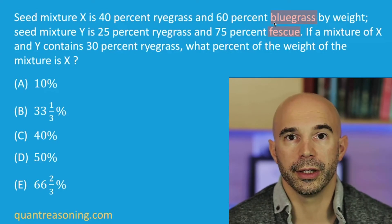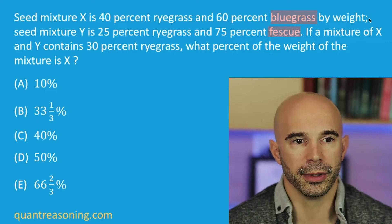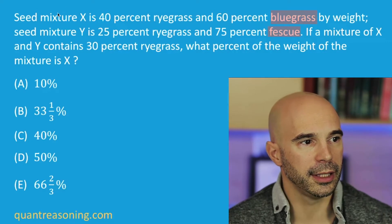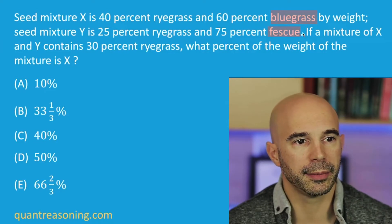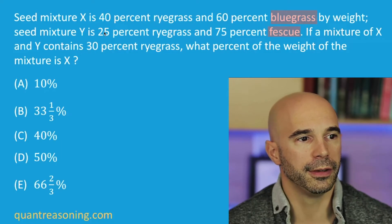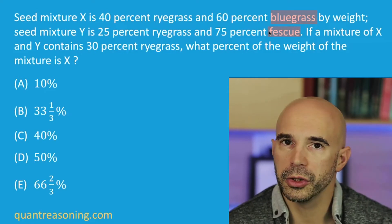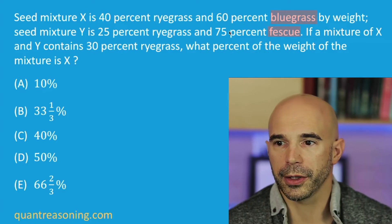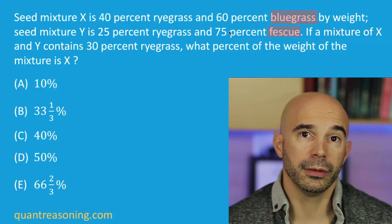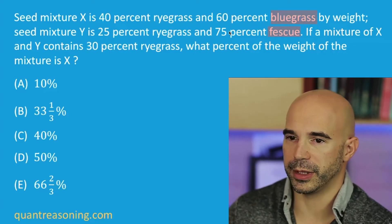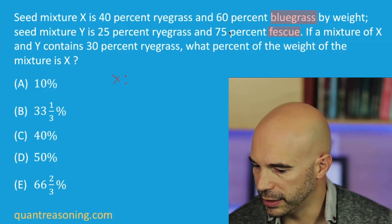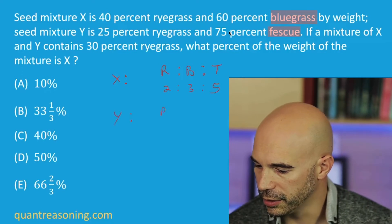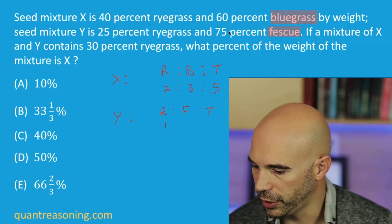If you follow what I always suggest, you probably paused at the semicolon and built a ratio that said for seed mixture X, ryegrass to bluegrass is a ratio of 2 to 3. And then you probably paused again at the period and did the same thing for seed mixture Y — a ratio of ryegrass to fescue of 1 to 3. And if you've really been paying attention, you probably even inserted a third column, what I refer to as the inference column — the total. So for X, the ratio is ryegrass to bluegrass to total: 2 to 3 to 5. And for Y, ryegrass to fescue to total is 1 to 3 to 4.